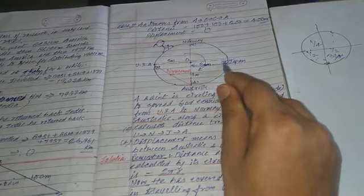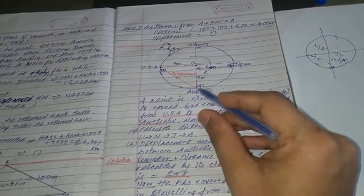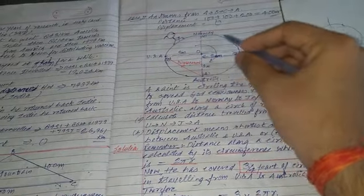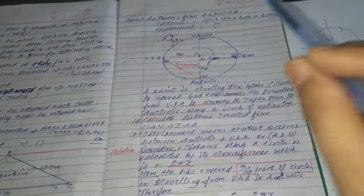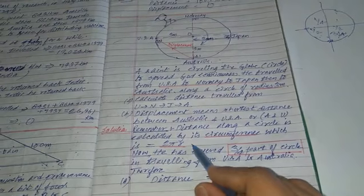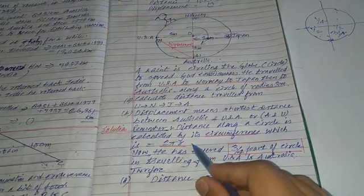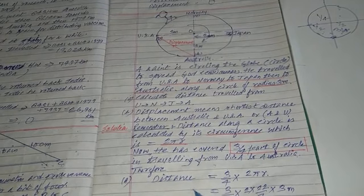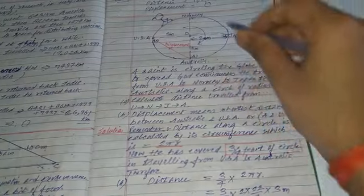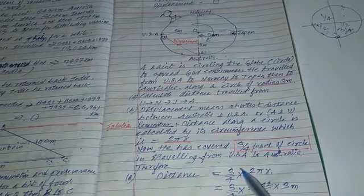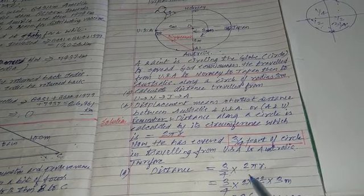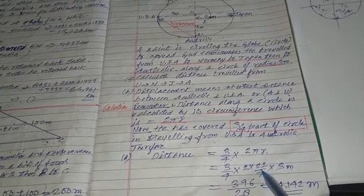So how will we calculate distance? The saint is travelling across the circumference of the circle. The circumference of the circle is 2πr. We will calculate the distance as 3/4 of 2πr — because 2πr is the circumference of the whole circle, and we want the 3/4th part, so we multiply by 3/4. So distance equals 3/4 into 2πr.